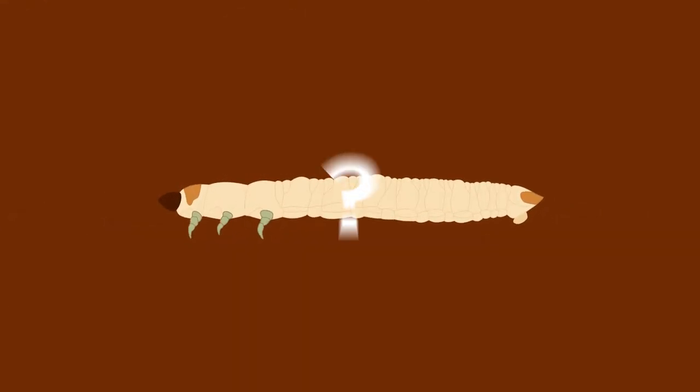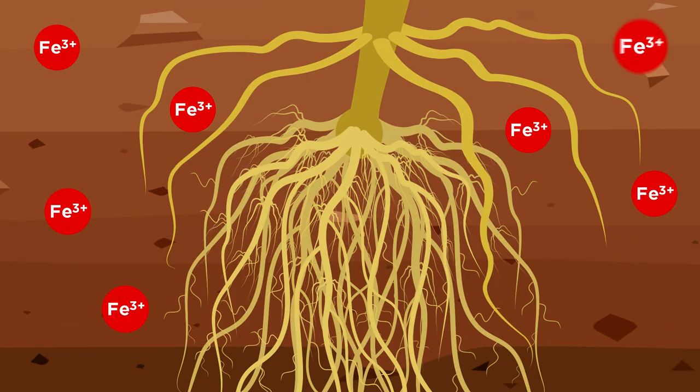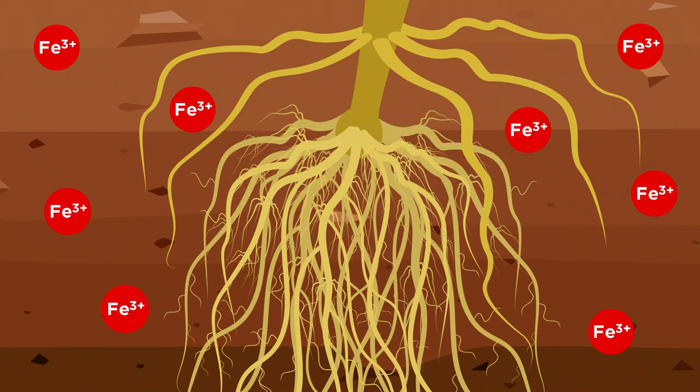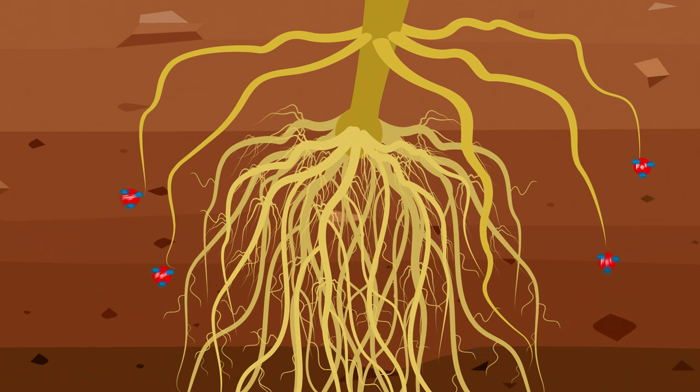Scientists tried to answer this question and made a surprising discovery. Maize crown roots release large amounts of secondary compounds called benzoxyzinoids into the soil. Some of these compounds bind iron, making it available for the plant to grow.